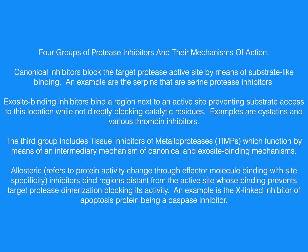Four groups of protease inhibitors and their mechanisms of action. Canonical inhibitors block the target protease active site by means of substrate-like binding. An example are the serpins, which are serine protease inhibitors. Exosite binding inhibitors bind the region next to an active site, preventing substrate access to this location while not directly blocking catalytic residues. Examples are cystatins and various thrombin inhibitors.